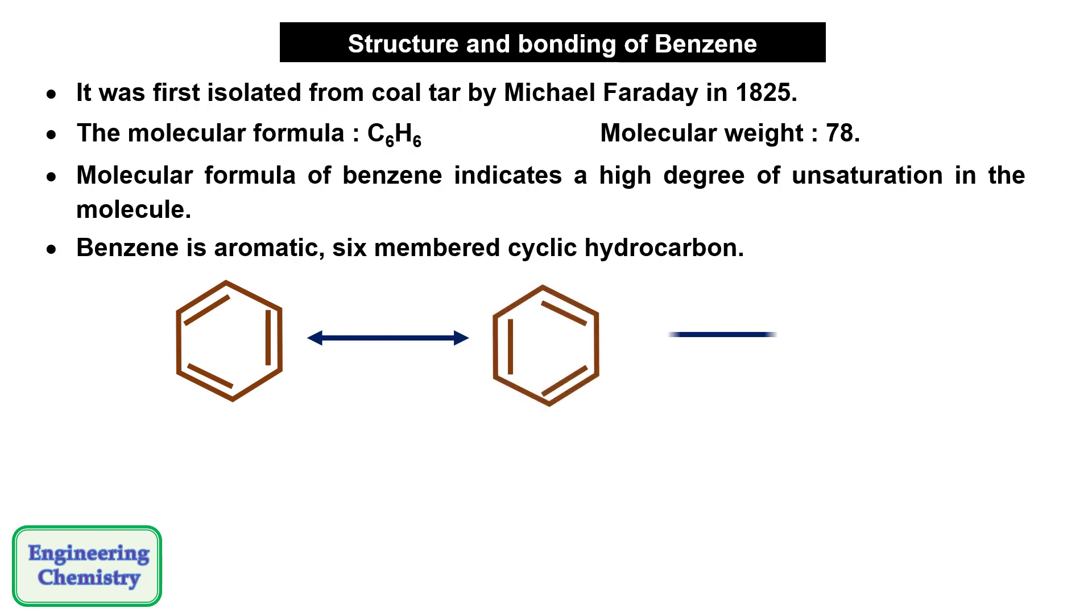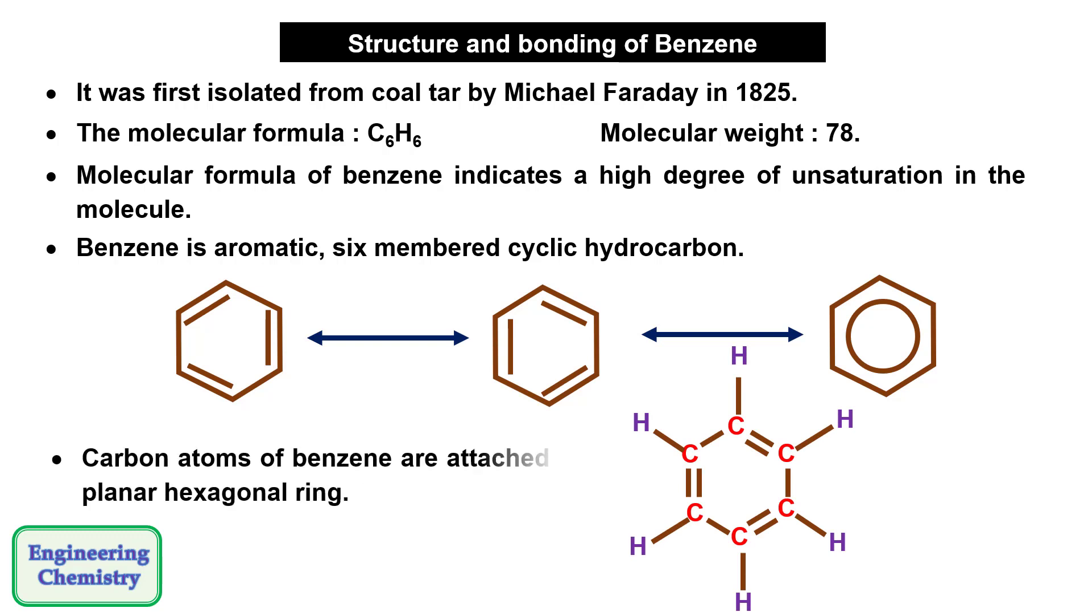These are the various structures of benzene and this structure can be elaborated in this way where all the carbon atoms and all the hydrogen atoms are in one plane and it forms a planar hexagonal ring.